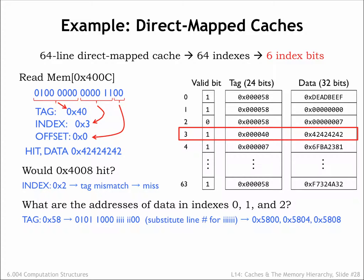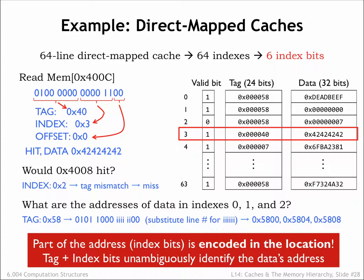What are the addresses of the words held by cache lines 0, 1, and 2, all of which have the same tag field? We can run the address matching process backwards. For an address to match these three cache lines, it would have to use the information in the cache tag field to fill in the higher-order address bits, and the lower address bits come from the index value. If we fill in the indices 0, 1, and 2, then convert the resulting binary to hex, we get 5800, 5804, and 5808 as the addresses for the data held in cache lines 0, 1, and 2. The complete address is formed by combining the tag field of the cache line with the index of the cache line, so we can correctly compare it against address requests from the CPU.